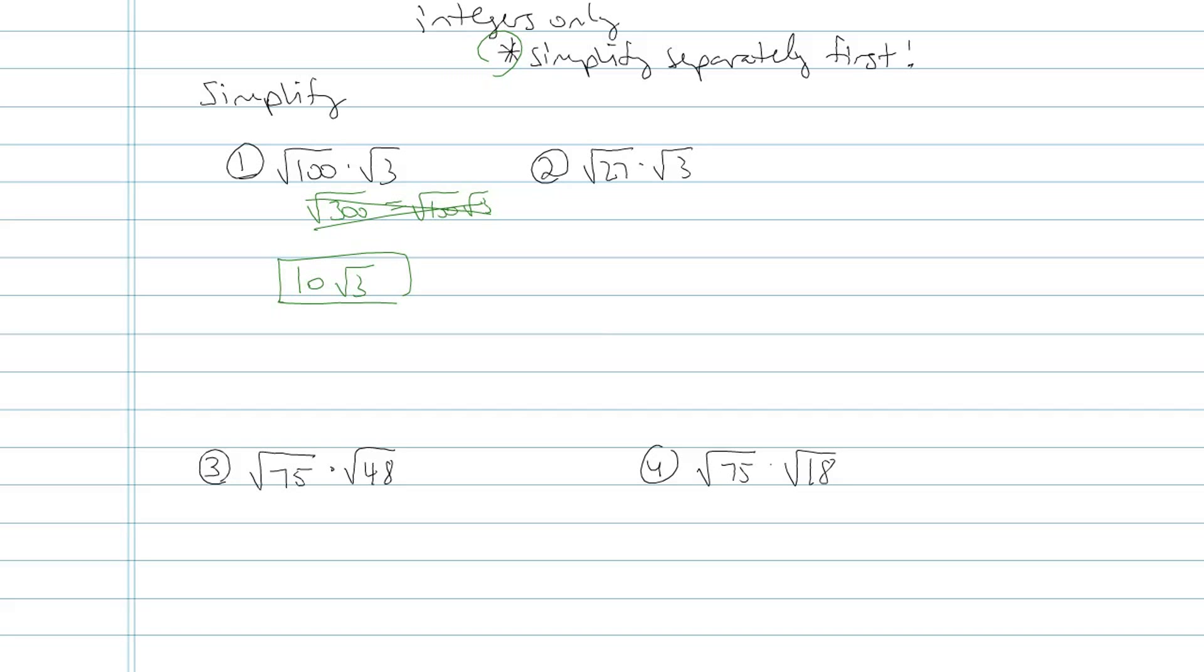Let's try another one. Square root of 27 times square root of 3. Now I sure could turn that into the product of 27 and 3, whatever 27 times 3 is, I don't know, it's big. It's a number I'm not very happy with, not very familiar with. So I'm not going to do it that way.